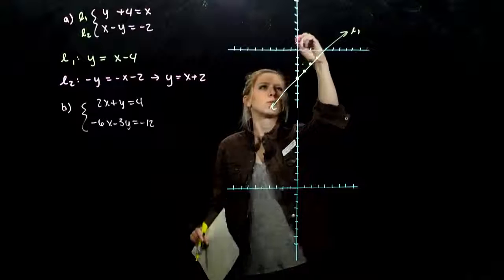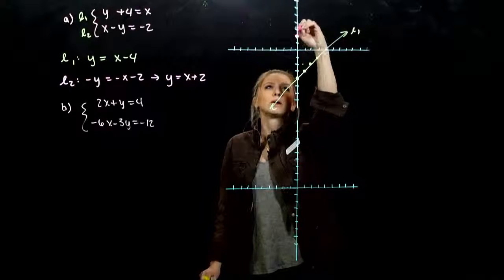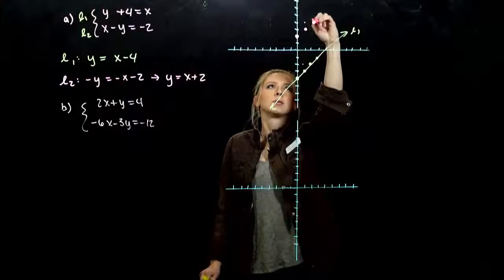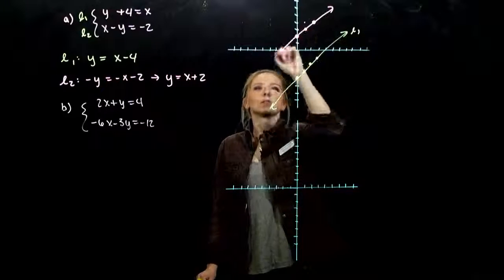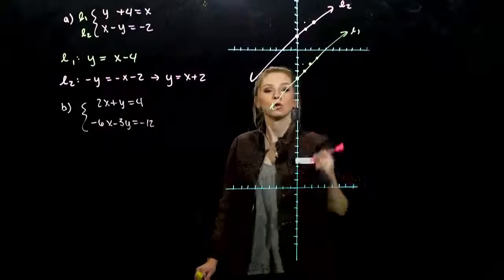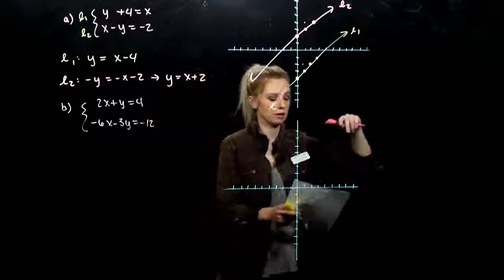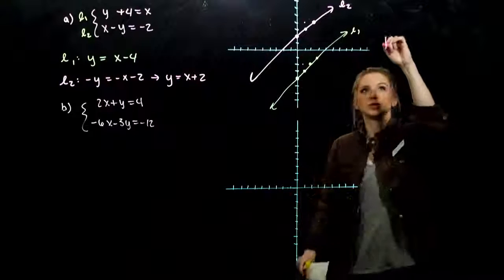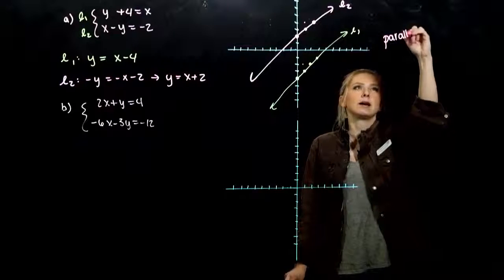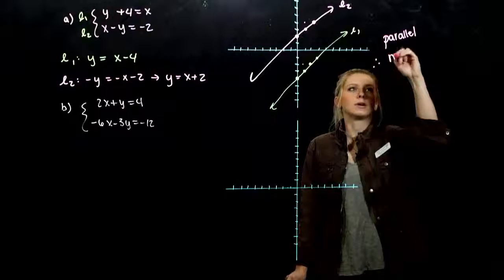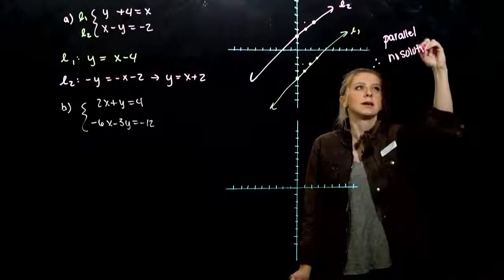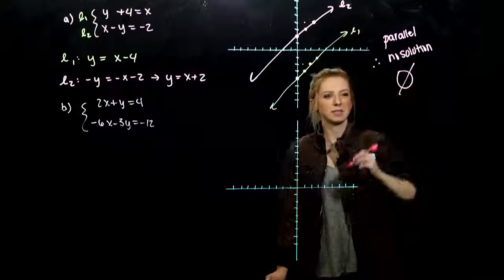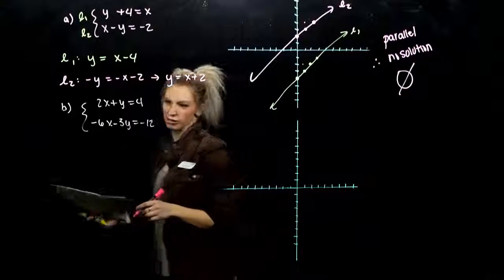Second one still had the same slope, but it went through 0, 2. Up 1 over 1. Up 1 over 1. So, relationship, they're never touching, they're parallel. What about our solutions? These are parallel lines, therefore no solution. And our set notation for that is that empty set. Set containing nothing.